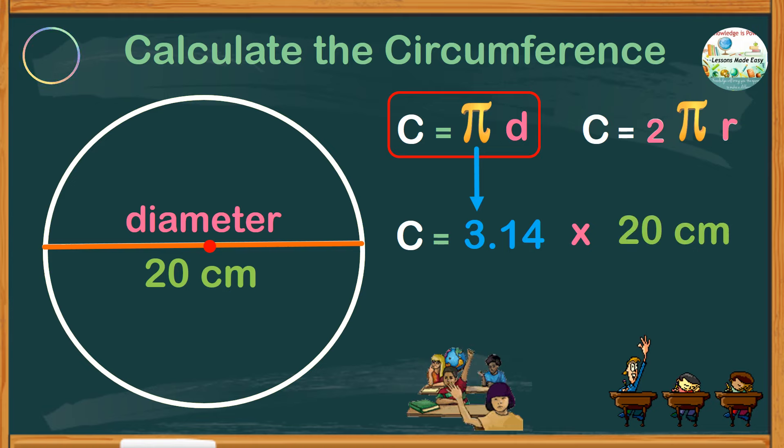If we multiply 3.14 by 20, we get 62.8. So our circumference is 62.8 centimeters.